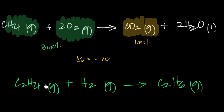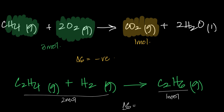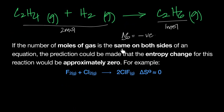Looking at another example: two moles of gas are becoming one mole of gas. When two moles of gas become one mole, the number of moles of gas decreases, so disorder decreases. Therefore delta S is negative. The rule: if moles of gas decrease, entropy decreases; if moles of gas increase, entropy increases. And if the number of moles of gas stay the same on both sides, you can calculate it exactly — or predict it's approximately zero.